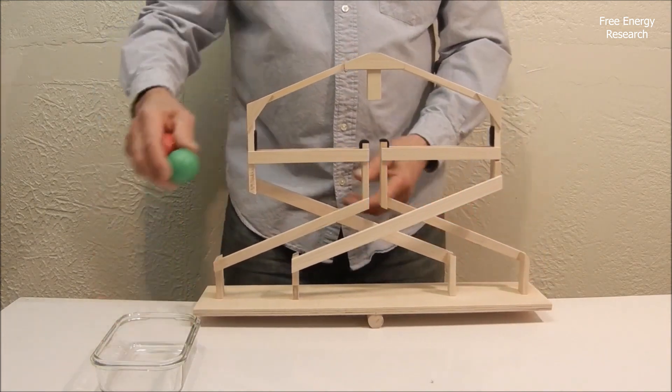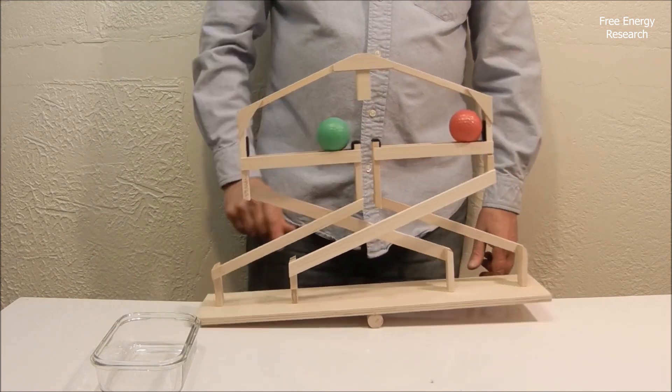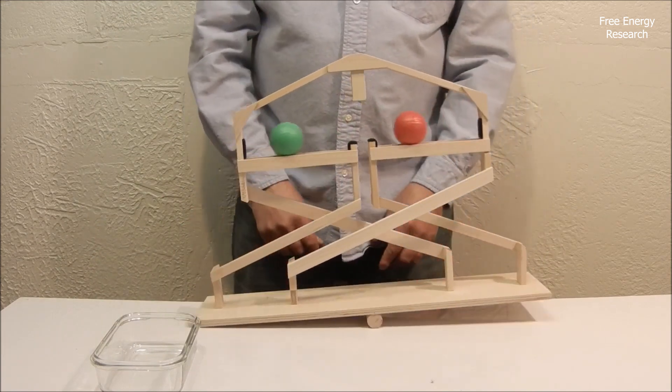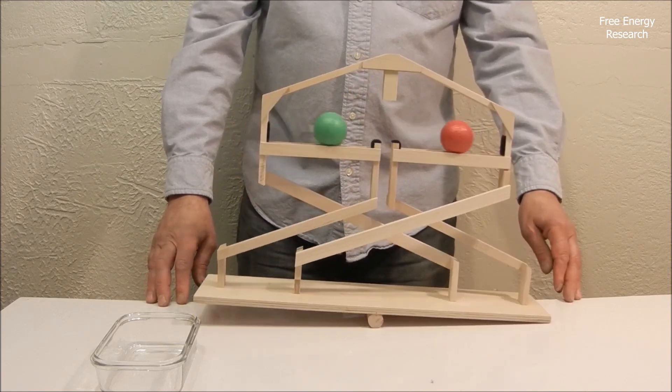At the top, two balls, one red and one green, are positioned on either side of the CISO. When the CISO tilts, one ball is released and rolls down a zigzag track, powered by gravity.